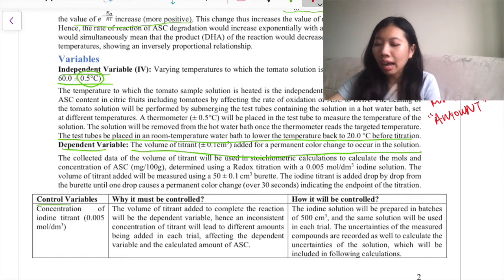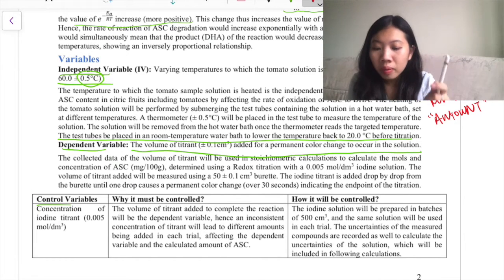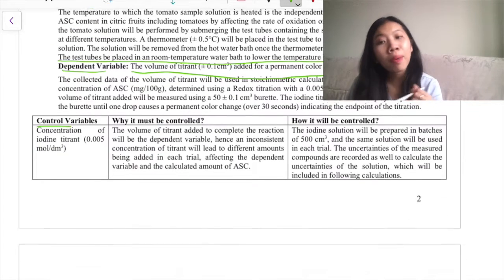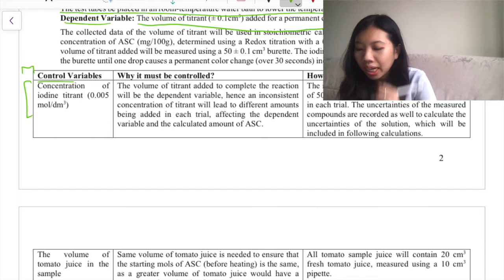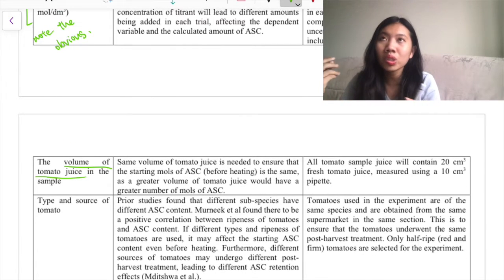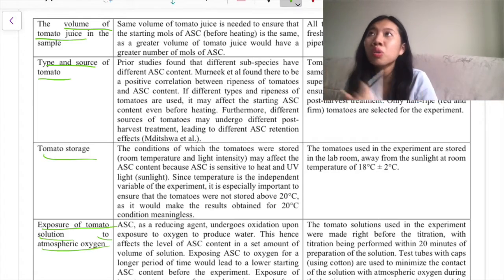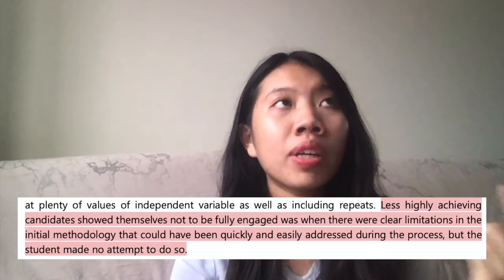The dependent variable I wrote is the raw dependent variable - the actual thing I'm going to measure. Also, don't use the word 'amount' - it's too vague. There's volume, mass, and other options - 'amount' doesn't mean anything. For control variables, I encourage you to put them in a table format so it's super structured. Organize control variables by priority - most important first, least important at the bottom. I saw online that you need at least seven or eight control variables to get a good mark.